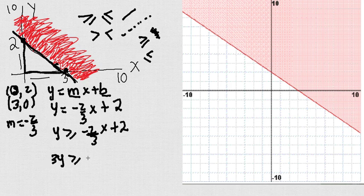So, 3y greater or equals, and then when I multiply by 3, this 3 is going to eliminate with this 3. This is going to be negative 2x plus 2 times 3 is equals to 6.